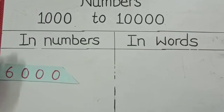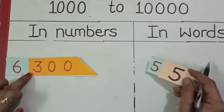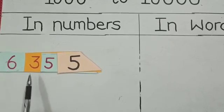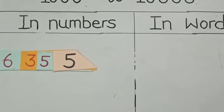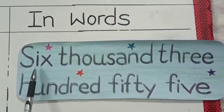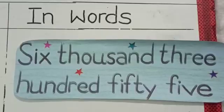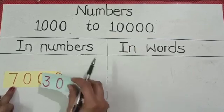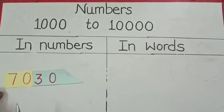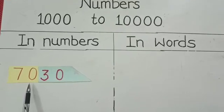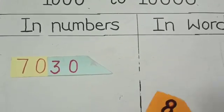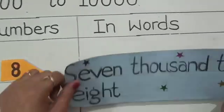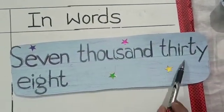Now next number is 6,355. 6,355 and in words it will be written as 6,355. Students, see we have no number at the place of 100. So it will be read as 7,038. In words 7,038.